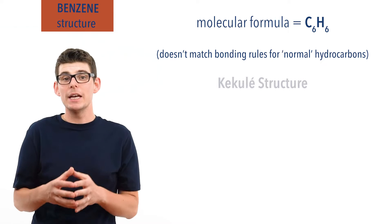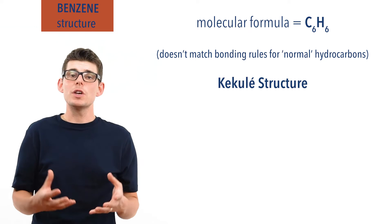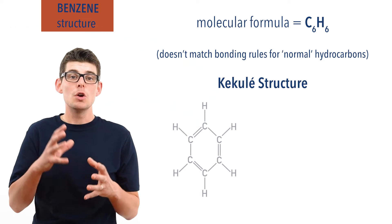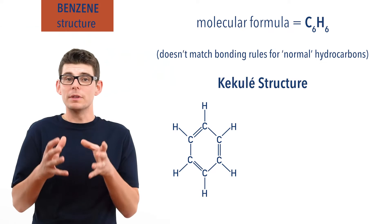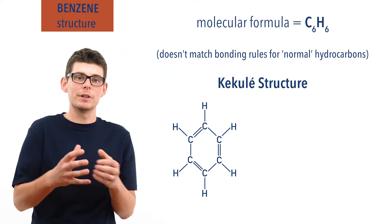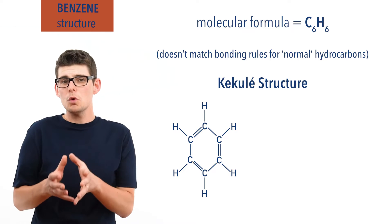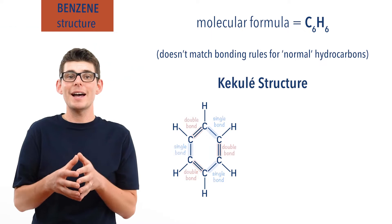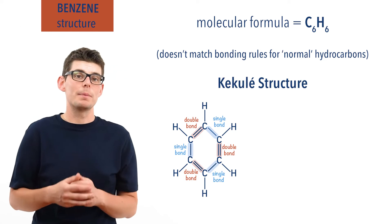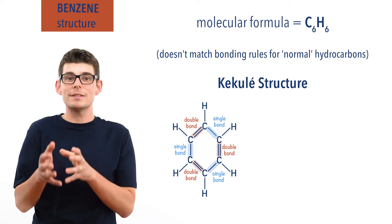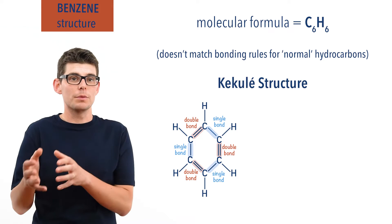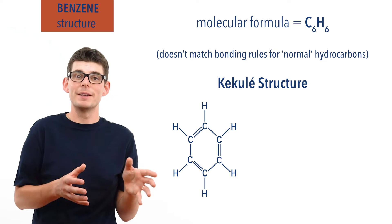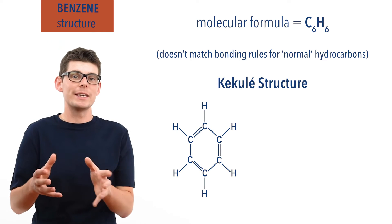But a chemist called Kekulé proposed a solution by suggesting that benzene was a cyclic hydrocarbon that had a hexagon ring-like structure, with the six carbon chain bonding back on itself. To ensure all carbon atoms have four bonds, each carbon has a single and a double bond to another carbon atom, giving alternating single and double carbon bonds in the ring. This model went a long way to solving the puzzle of benzene and is now called the Kekulé structure.